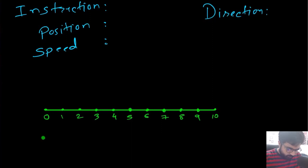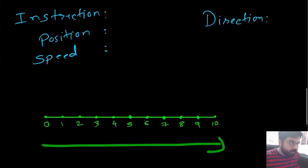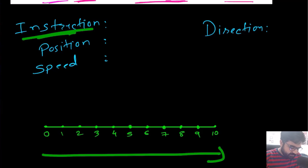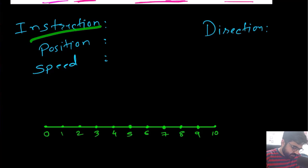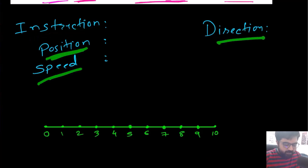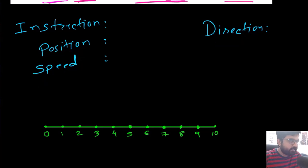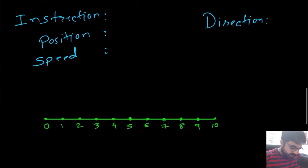I've drawn a number line. Initially the car is at position zero and speed is one. If we provide an accelerate instruction, the position becomes zero plus one, which is one, and the speed updates to two for the next step.